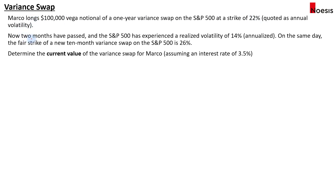Now two months have passed and the S&P 500 has experienced a realized volatility of 14% in annualized terms. On the same day, the fair strike of a new 10-month variance swap on the S&P 500 is 26%. Determine the current value of the variance swap for Marco, assuming an interest rate of 3.5%.